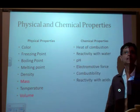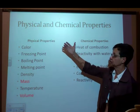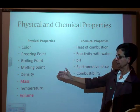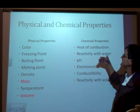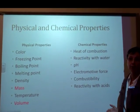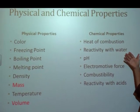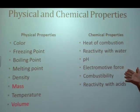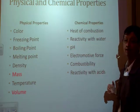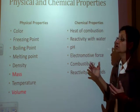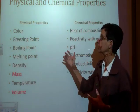There are physical and chemical properties — so make sure you pause and take a moment to copy these down. Physical properties include color, freezing point, boiling point, melting point, density, mass, temperature, and volume. Over on this side I have the chemical properties: heat of combustion, reactivity with water, pH, electromotive force, combustibility — does it burn or does it not burn — and reactivity with acids or any other substance. So what we're looking at here are just some examples of these physical and chemical properties.